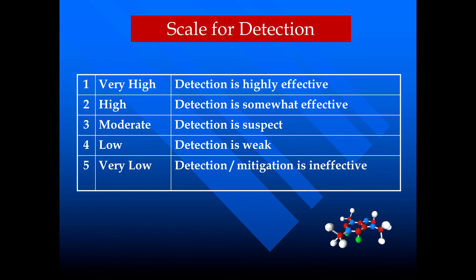Now the rate for detection. If the detection system is very high, we can detect defects during the process and we rate it as 1. If the detection process is very low, meaning the product or defect may go undetected, then we rate it as 5.